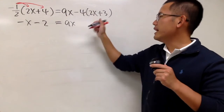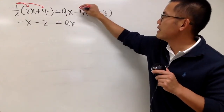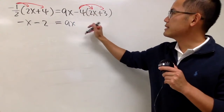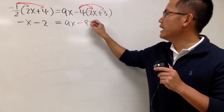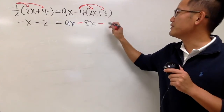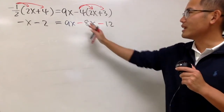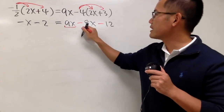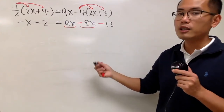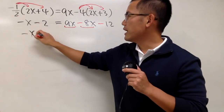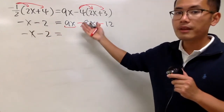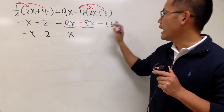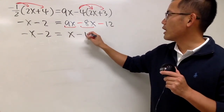We continue with 9x on the right side. Distribute again: negative 4 times 2x is negative 8x, and negative 4 times 3 is negative 12. So we have 9x minus 8x, which we can combine like terms. Writing it down: negative x minus 2 equals 9x minus 8x, which is just x, and we have minus 12.